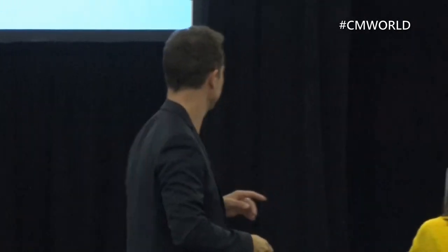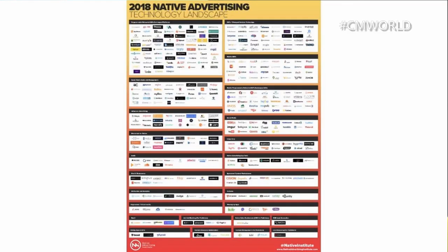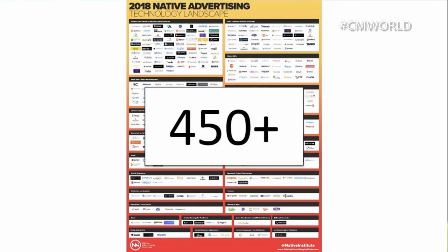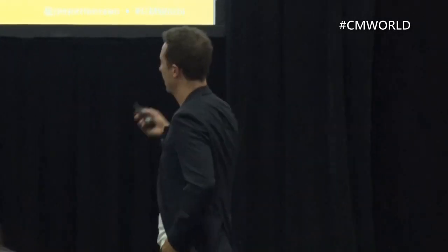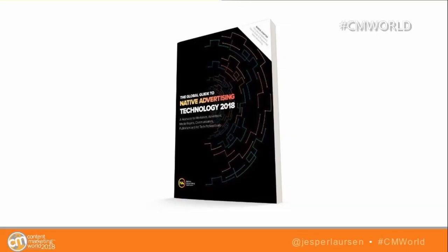So those are the four main categories. Of course, if you want to take a deep dive, there's much more than that. We put out every year a landscape of the entire native advertising technology — platforms and technologies you can use. So far, we came up with more than 450 of those. You can download an e-book we do every year on the native advertising technology landscape if you want to take an even broader look.